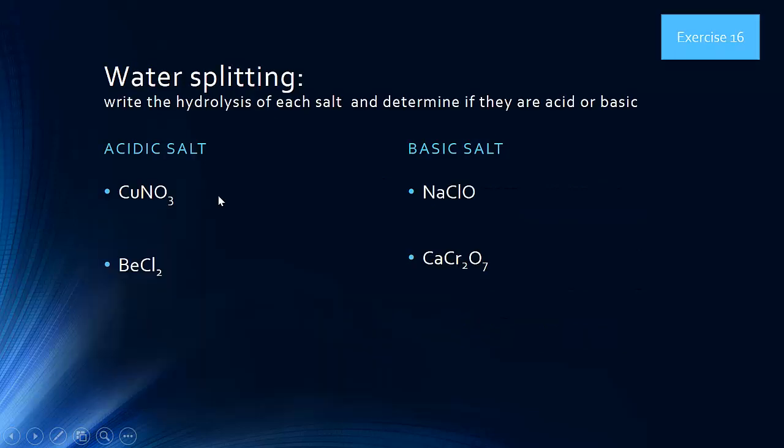To write a hydrolysis equation, you need to look at what acid and what base went into making that salt and determine which scenario you're in. Whichever is the strong one wins — think of it like a tug of war. A strong acid against a weak base means the strong acid will pull the equilibrium towards the acidic side.